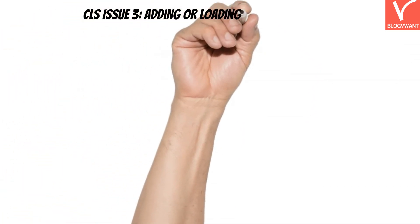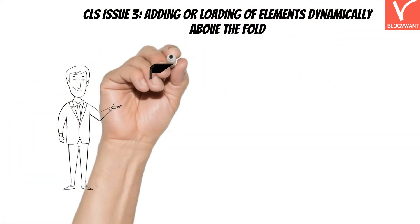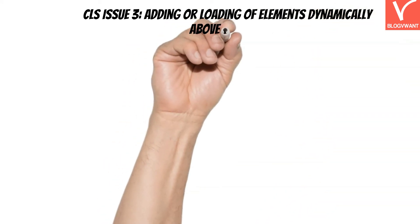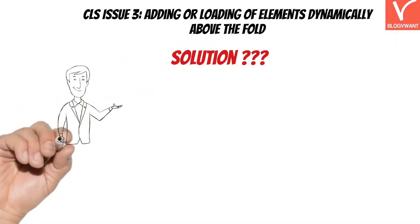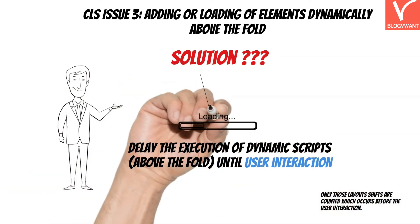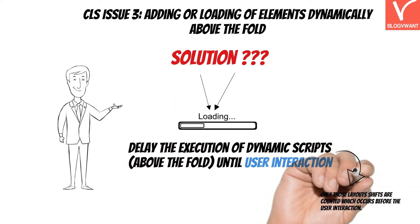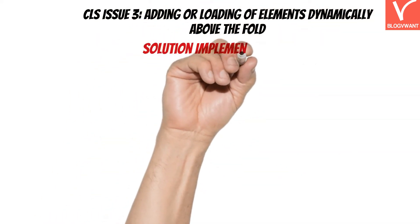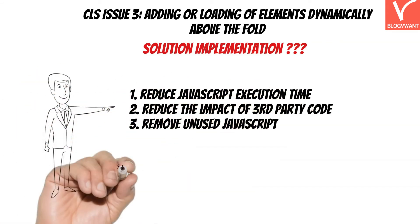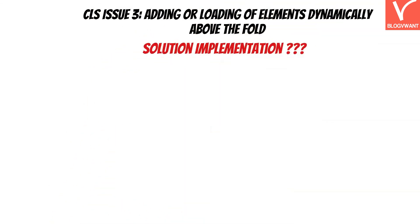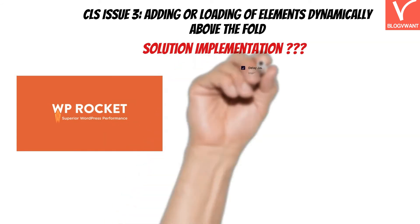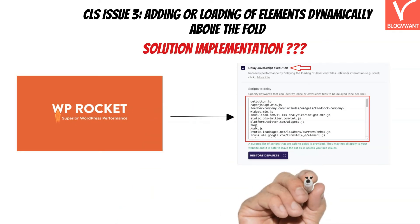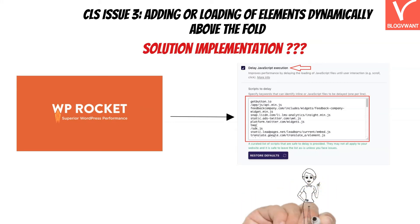The third possible reason for bad CLS is dynamic elements like buttons, pop-ups, and sticky bars that appear above the fold content. The solution is to delay the execution of all scripts injected dynamically above the fold until user interaction. As per Google Core Web Vitals guidelines, only layout shifts that occur before user interaction are counted. Gather the problematic scripts from the Google PageSpeed tool, then use WP Rocket's Delay JS Execution module, enable it, and insert the URLs of those scripts. After that, those scripts will only execute on user interaction, so there is no impact on the CLS score.